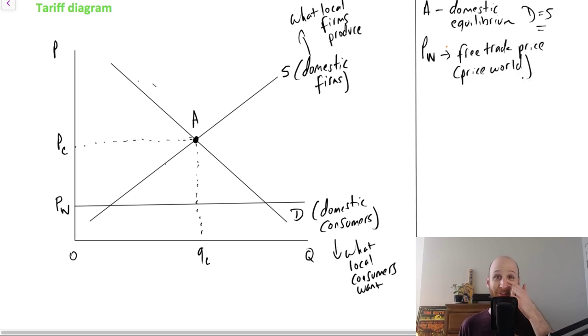Pw is the free trade price, the world price. So it's the price we get by buying things overseas. And at price world, something different happens from what happens at equilibrium.